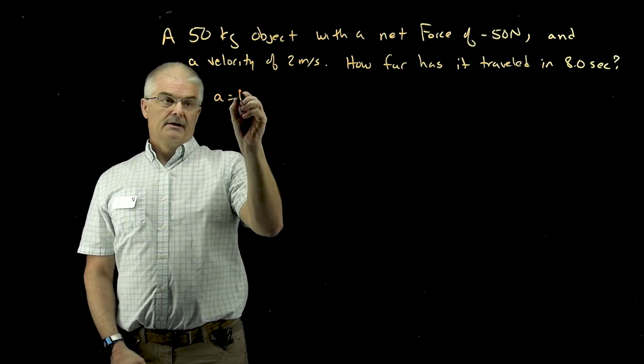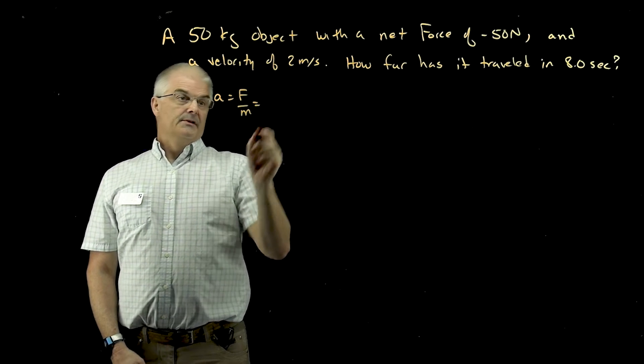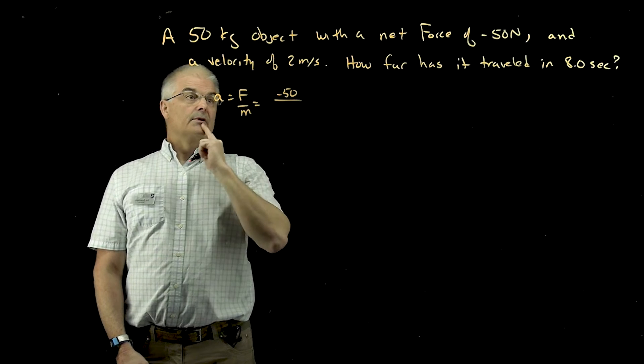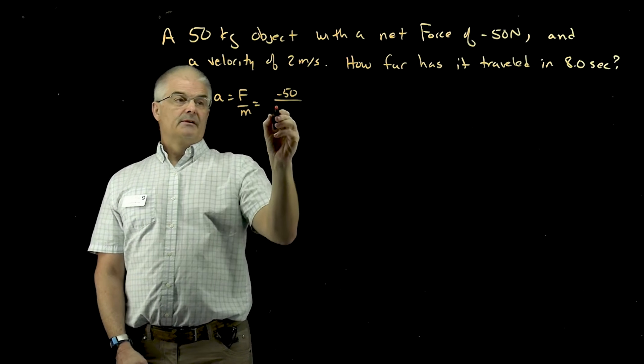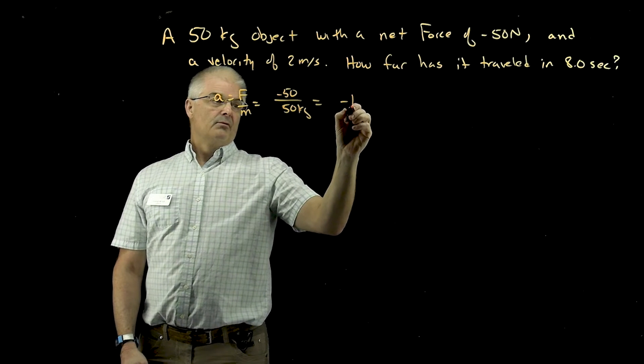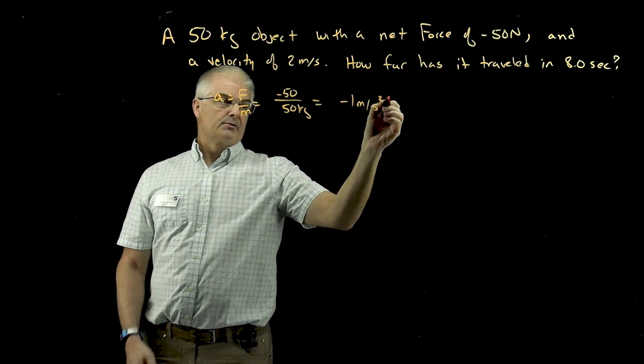So if you recall, it's F over M. Let's find this answer. The acceleration will be F, which is negative 50, over the mass, 50 kilograms. So the acceleration is negative 1 meter per second squared.